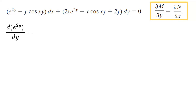To take the partial derivative of M with respect to y, we need the partial derivative of e^(2y) with respect to y, and then the partial derivative of the y·cos(xy) term. The partial derivative of e^(2y) with respect to y is 2e^(2y), using the chain rule.